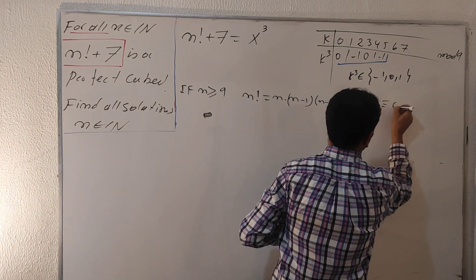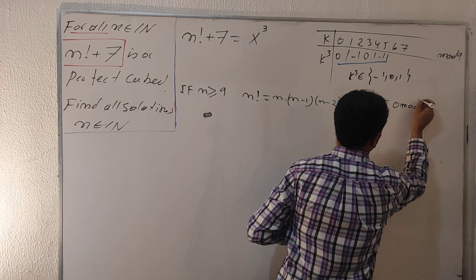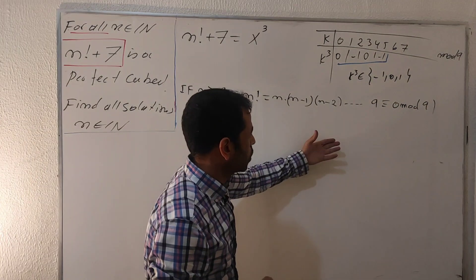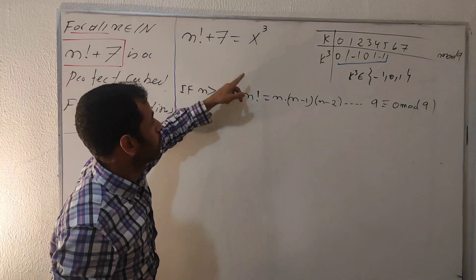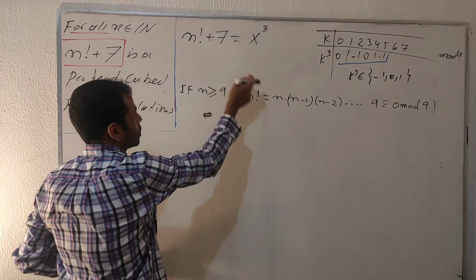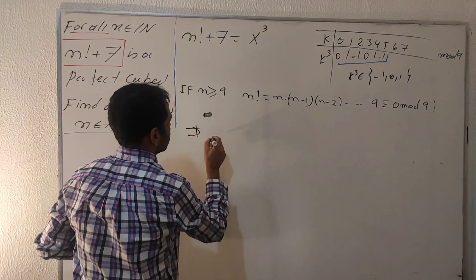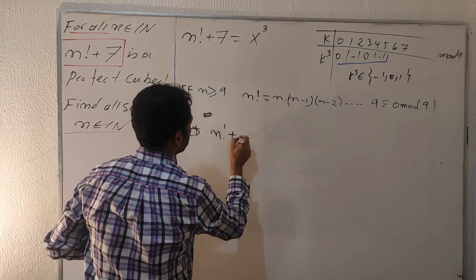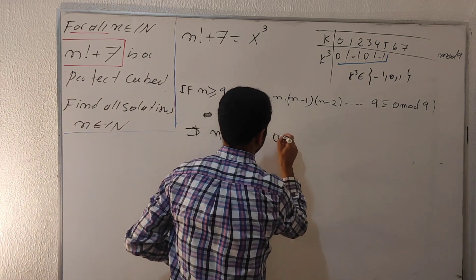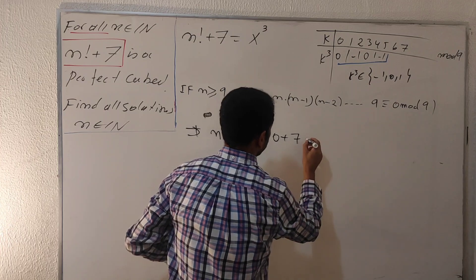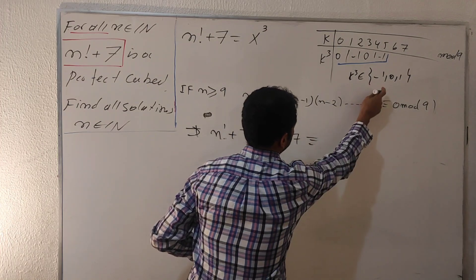We get a reminder zero for n factorial, but we have plus seven here. I'm going to add number seven on this one. So I get here n factorial plus seven is congruent to zero plus seven.